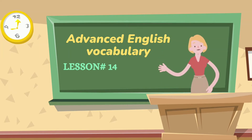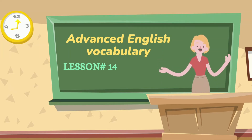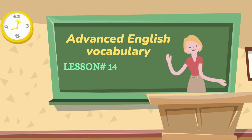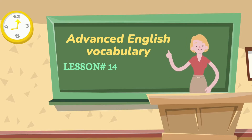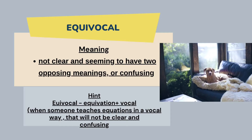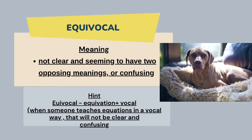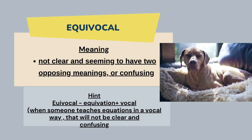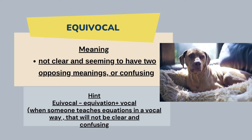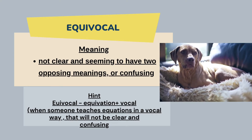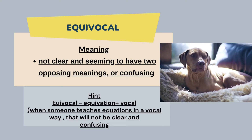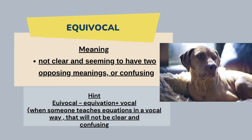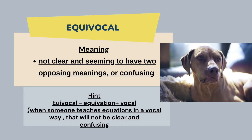Hello, welcome to lesson 14 of our advanced English vocabulary class. The first word of today's lesson is 'equivocal.' Equivocal means not clear, or seeming to have two opposing meanings — something that is confusing, enigmatic, or ambiguous.